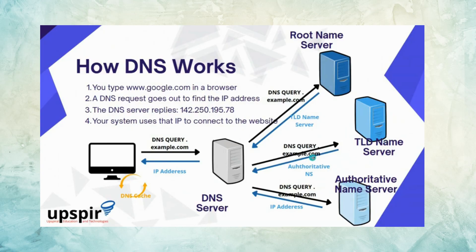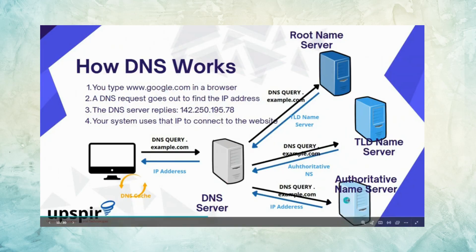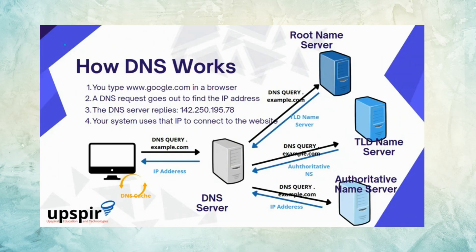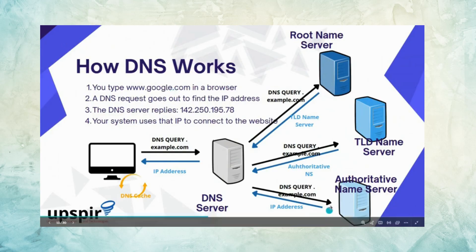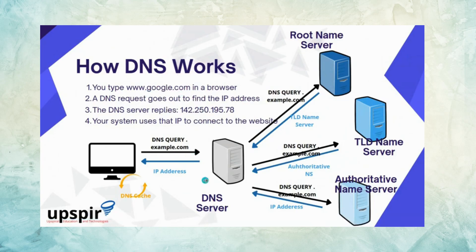The root name server returns the IP address of the top-level domain (TLD) name server. For example, for google.com, the request goes to the .com TLD name server, which has the mapping for google.com. The request then reaches the authoritative name server for google.com, which has the actual IP mapping. Finally, the DNS server returns the IP address of www.google.com to your machine, which then uses it for communication.